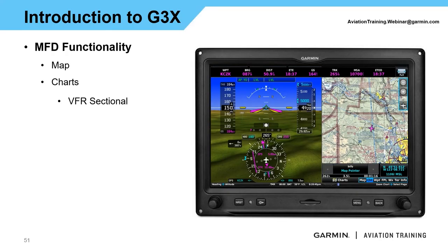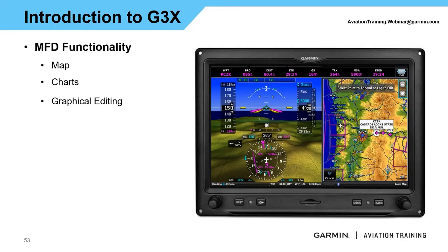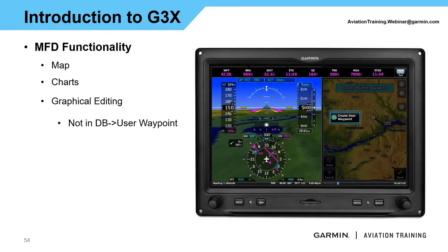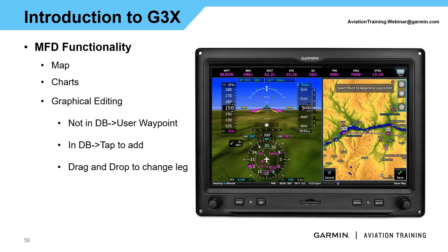Going one big knob over brings us to the sectional page, where we can show a VFR sectional, IFR low, IFR high, and route charts — digital copies of those charts. If you hit menu and select graphically edit, you can go in and start building flight plans directly off the map. If you're going to a point that's not in the database, it'll ask if you want to create a user waypoint, so we can build flight plans even without a specific waypoint there. If it's a fix in the database, tap on it — or if there are multiple options, select the one you want — and it gets added to the flight plan.